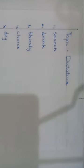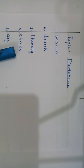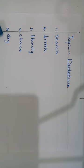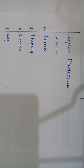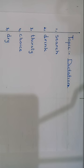The second word is 'drink' — D-R-I-N-K. The third word is 'thirsty' — T-H-I-R-S-T-Y. The fourth word is 'choice' — C-H-O-I-C-E. The fifth word is 'dry' — D-R-Y. Now you will have to learn and write these dictation words in your notebook of English literature.